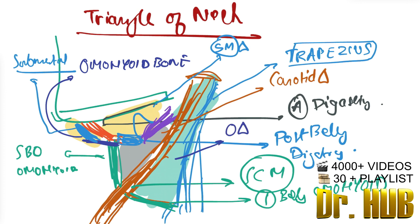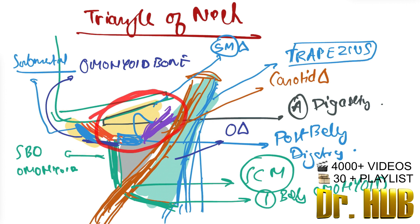So the major triangles we are seeing are: the submental triangle, the submandibular triangle, the carotid triangle, and the occipital triangle. These are the major triangles of the neck.